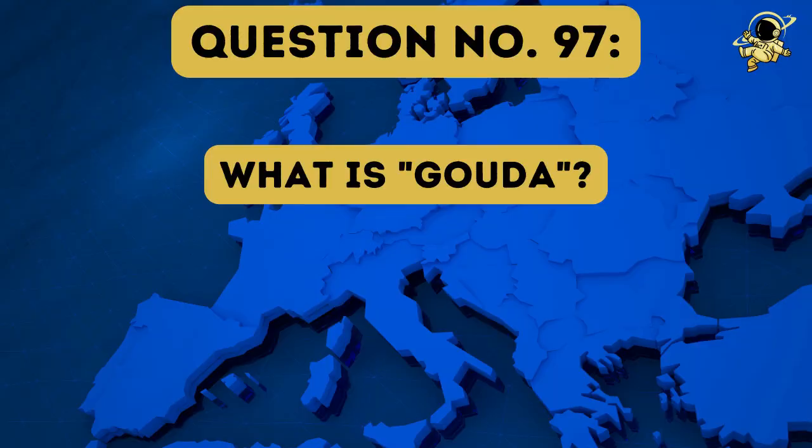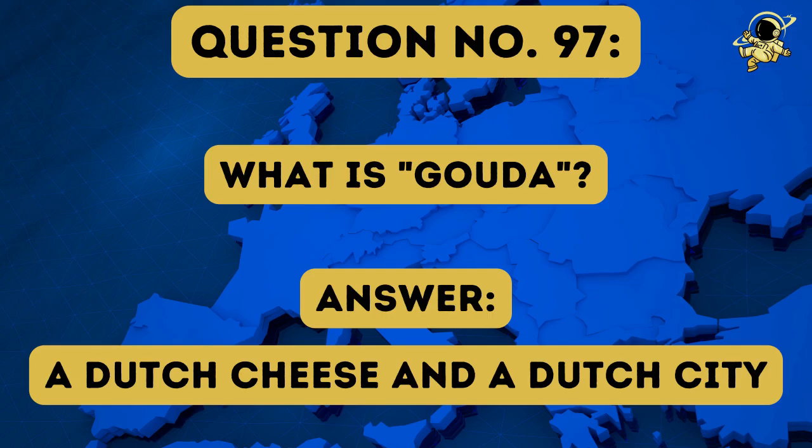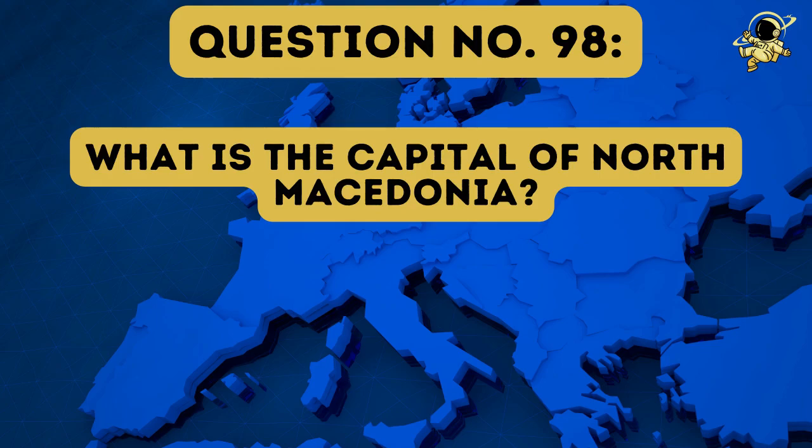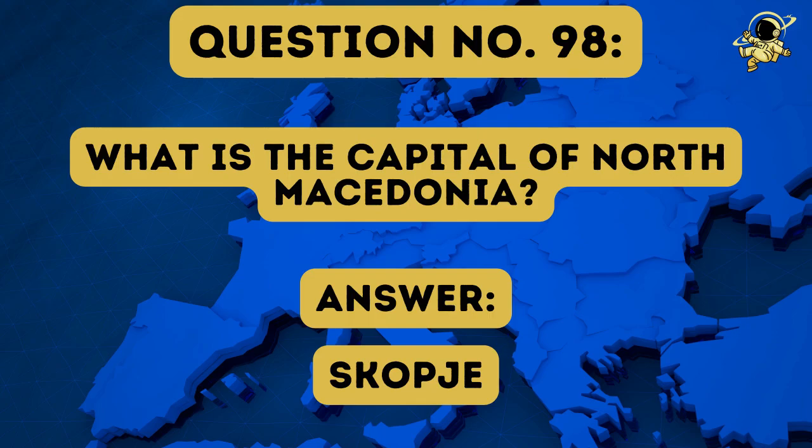Question number ninety-seven: What is Gouda? There is a double answer to question number ninety-seven — Gouda is at the same time a Dutch cheese and a Dutch city, and the city is the reason for the name of the cheese. The answer to question number ninety-eight is Skopje.